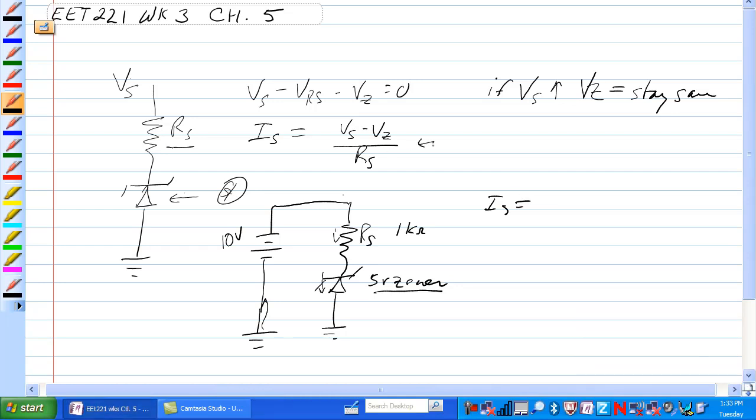So what is IS if we were using this formula? Have a look at it. 10 volts here, and if the Zener drops 5 volts, then what's left for the 1K Ohm is also 5 volts. Let's do it this way. Vs minus Vz over RS, and that's equal to 10 volts minus 5 volts over 1K Ohm, and IS is equal to 5 milliamps.